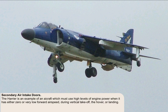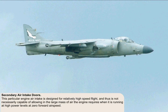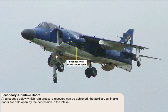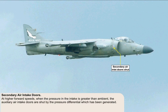During these periods, the demand of the engine compressor for air is extreme. This particular engine air intake is designed for relatively high-speed flight and, as a consequence, is not necessarily capable of allowing in the large mass of air the engine requires when it's running at high power levels at zero forward airspeed. To allow in more air to satisfy the engine demands, up to 16 auxiliary air intake doors have been fitted just behind the lip of the main air intake. At air speeds below which ram pressure recovery can be achieved, the auxiliary air intake doors are held open by the depression in the intake. At higher forward speeds, when the pressure in the intake is greater than ambient, the auxiliary air intake doors are shut by the pressure differential which has been generated.